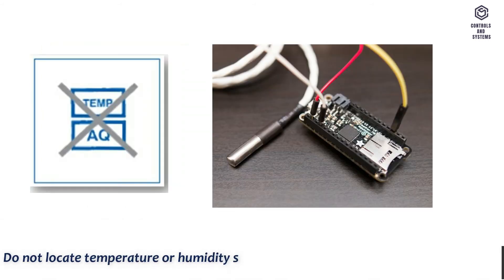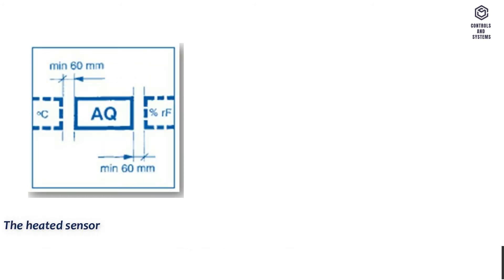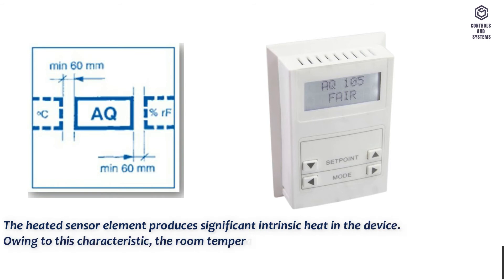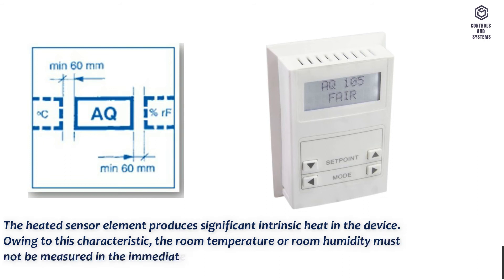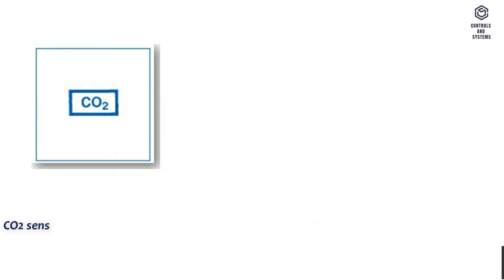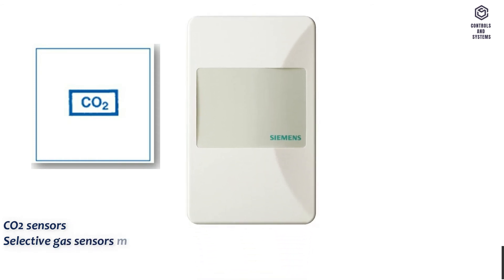Do not locate temperature or humidity sensors above or below the AQ sensor. The heated sensor element produces significant intrinsic heat in the device; owing to this characteristic, room temperature or room humidity must not be measured in the immediate vicinity. Maintain a clearance of minimum 60 millimeters on each side of the AQ sensor.